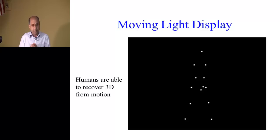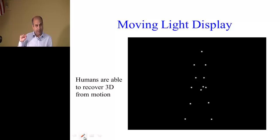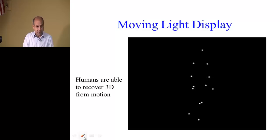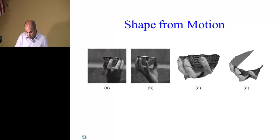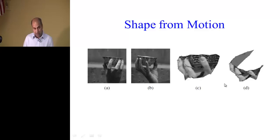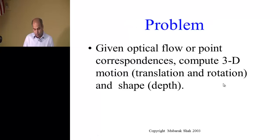This is an example called the moving light display. Imagine looking at dots in a single image — it could be anything. But when you start playing it, you can see there's a person walking. This is a very powerful cue: we are perceiving structure in 3D, recovering it based on very minimum information with all other cues masked out. Today we'll talk about how to write a computer program that takes images like this and recovers the 3D shape and 3D motion, and synthesizes images from different viewpoints.